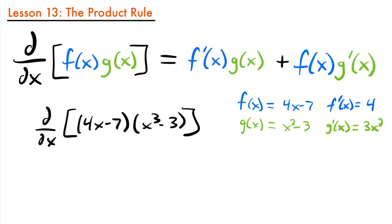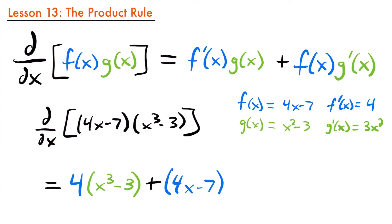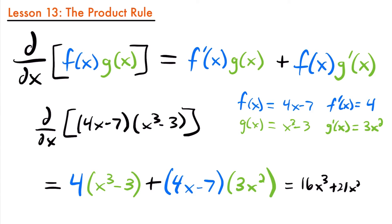We can use all of these functions to plug into our product rule and find the derivative. This would be equal to f prime of x, which is 4, multiplied by g of x, which is x cubed minus 3, plus the original function f of x, which is 4x minus 7, multiplied by g prime of x, which is 3x squared. If we distribute and simplify, our final answer would be 16x cubed plus 21x squared minus 12.